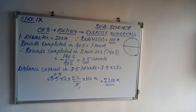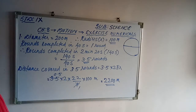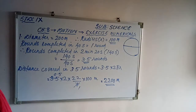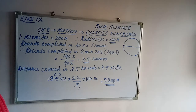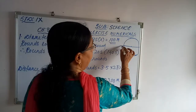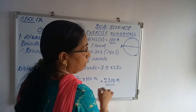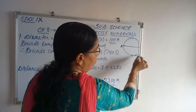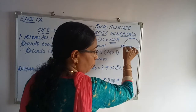Now, one more question is asked: what is the displacement after 2 minutes 20 seconds? You know that after 2 minutes 20 seconds, the athlete covers 3.5 rounds. After 3.5 rounds, what will be the position of the athlete? The athlete starts his journey from point A.